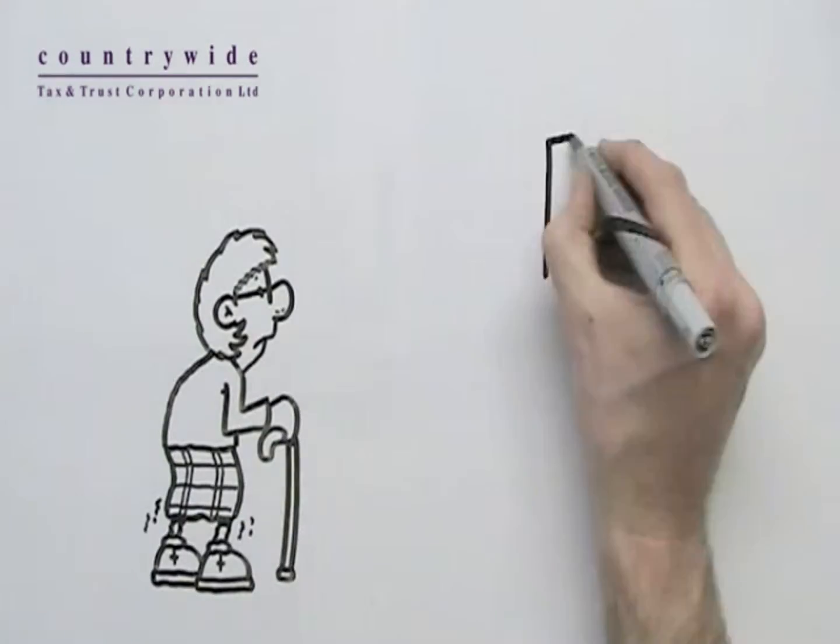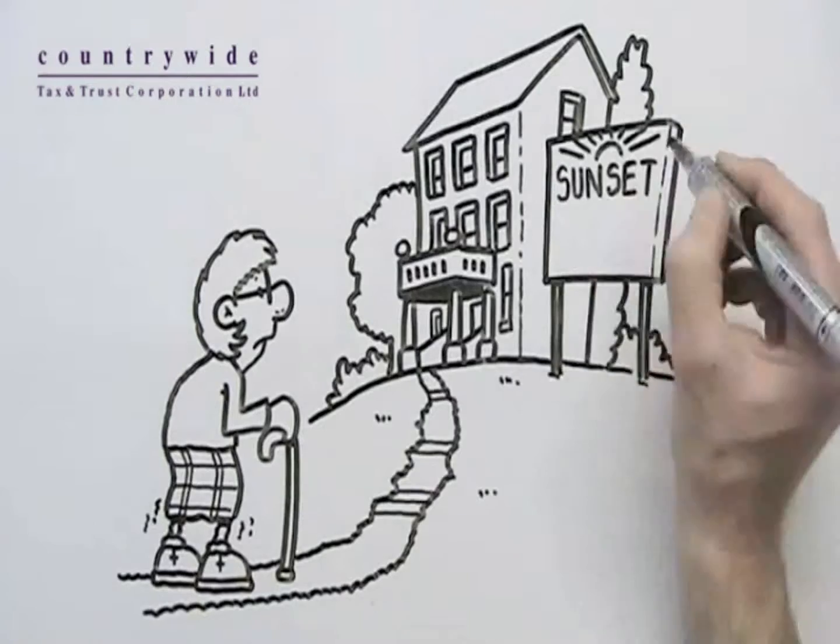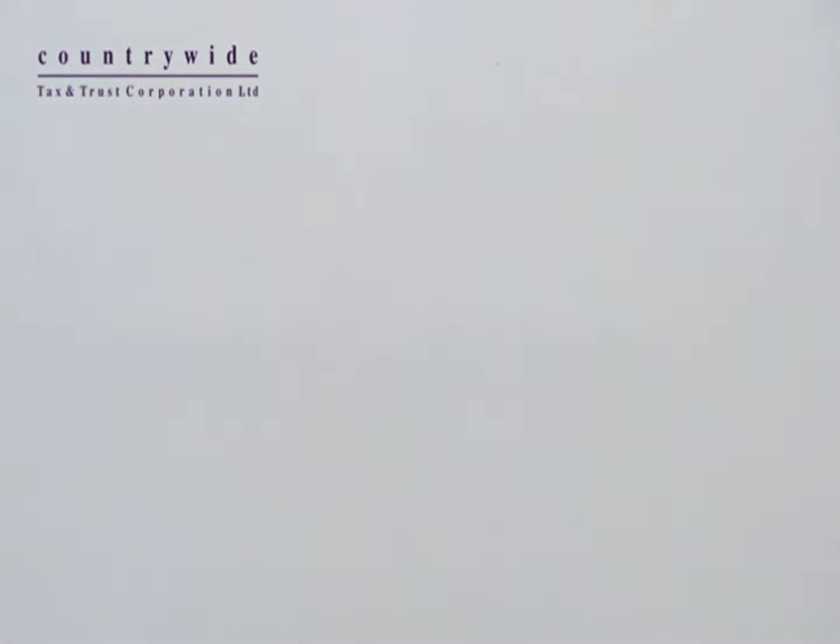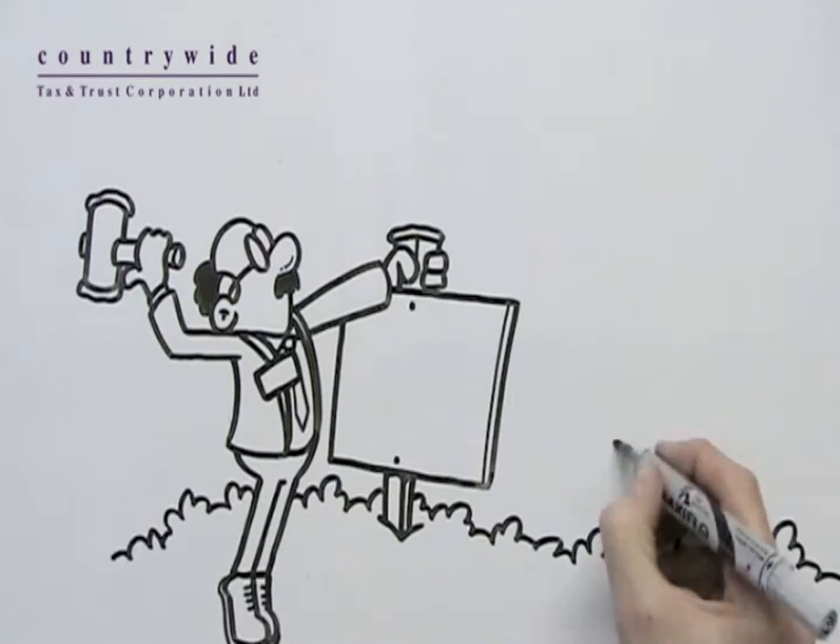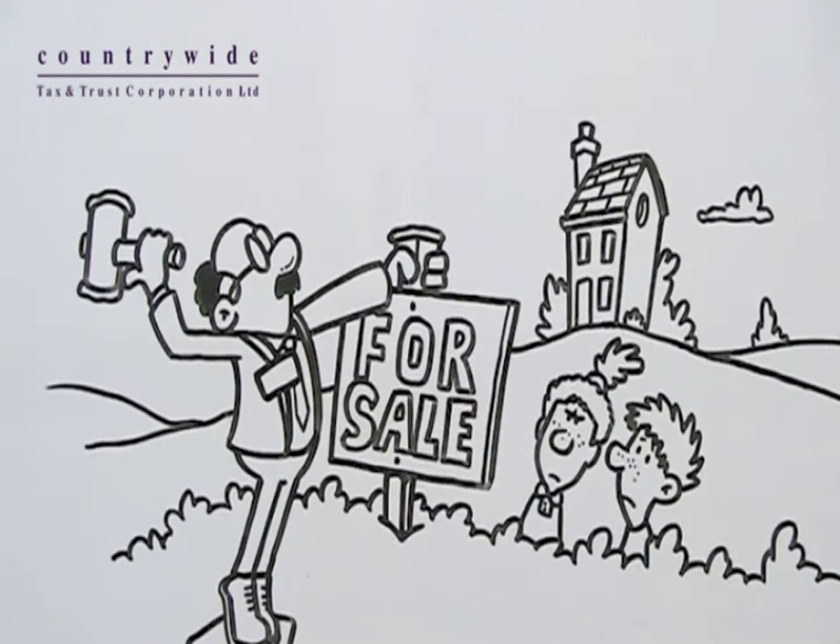You might be thinking, that's fine, but what happens if your partner later goes into care and has no money to pay for it? The council can force you to sell your house to pay for care fees, leaving your children without the legacy you hoped to leave.